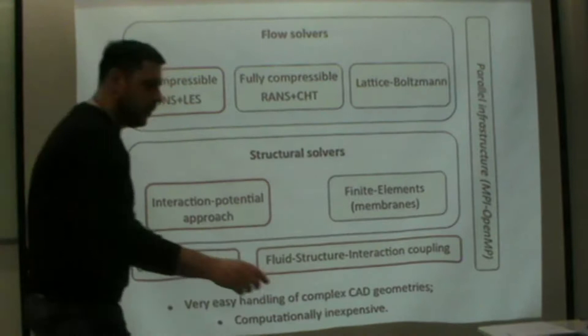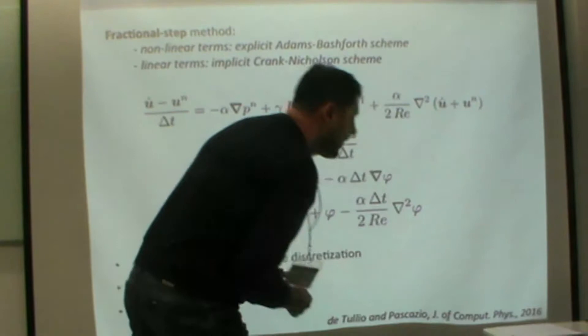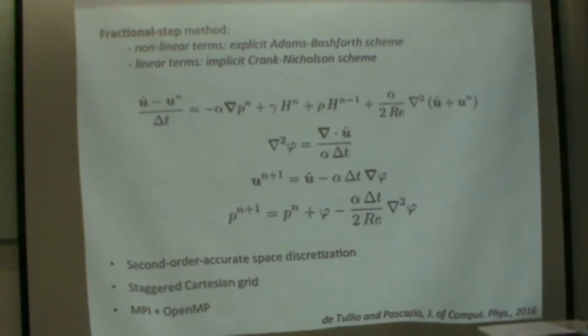About the flow solver, we have a finite difference solver using the fractional step approach. The non-linear terms are discretized explicitly by the Adams-Bashforth scheme. The linear terms are discretized by the implicit Crank-Nicholson scheme, so we have this first version of the equation where we observe the intermediate velocity. We correct this velocity with the immersed boundary forcing to enforce the boundary condition, then we evaluate phi to correct the velocity to satisfy the constraint of conservation of mass and update the pressure.